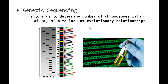We have genetic sequencing, where we're able to look at the number of chromosomes within each organism and then see how they fit evolutionarily with other organisms. So we're able to sequence the DNA, have a look at the similarities between different organisms, and see how closely they're related to one another.